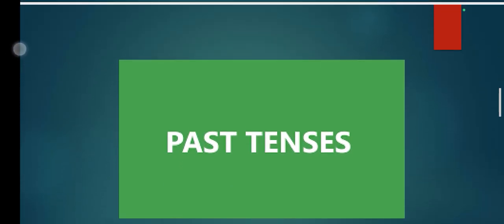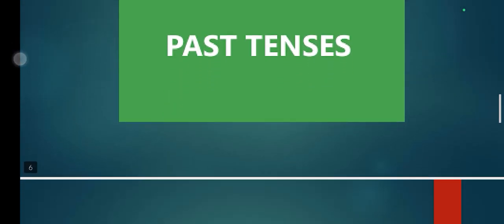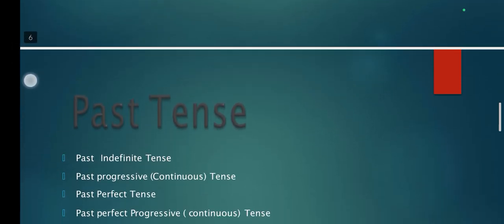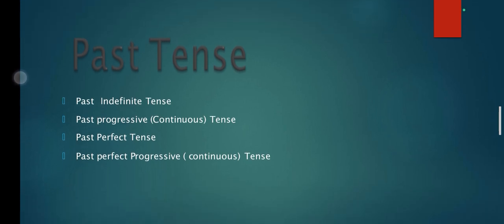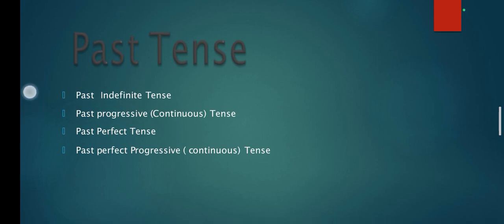Past tense is also divided into four different forms: past indefinite tense, past progressive continuous tense, past perfect tense, and past perfect progressive continuous tense.